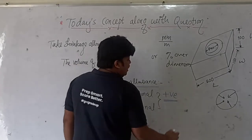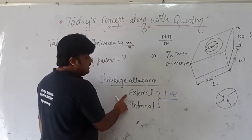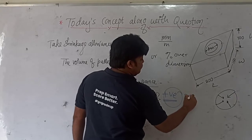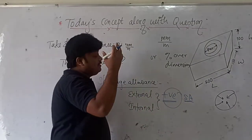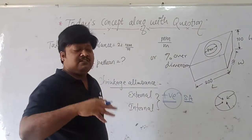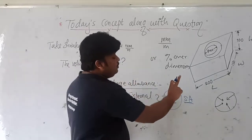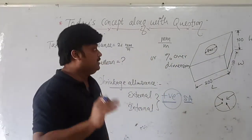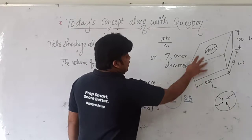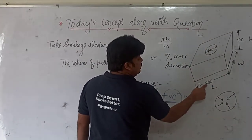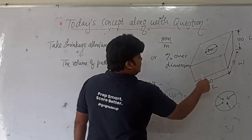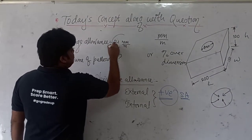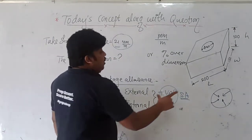For positive shrinkage allowance, both the external dimension and the internal dimension shrink towards the center — so we add to both. There is no such thing as giving negative shrinkage to the bore and positive to the external dimension. Both are given positive shrinkage allowance. The given shrinkage allowance here is 21 mm per meter, meaning 21 mm over 1000 mm.